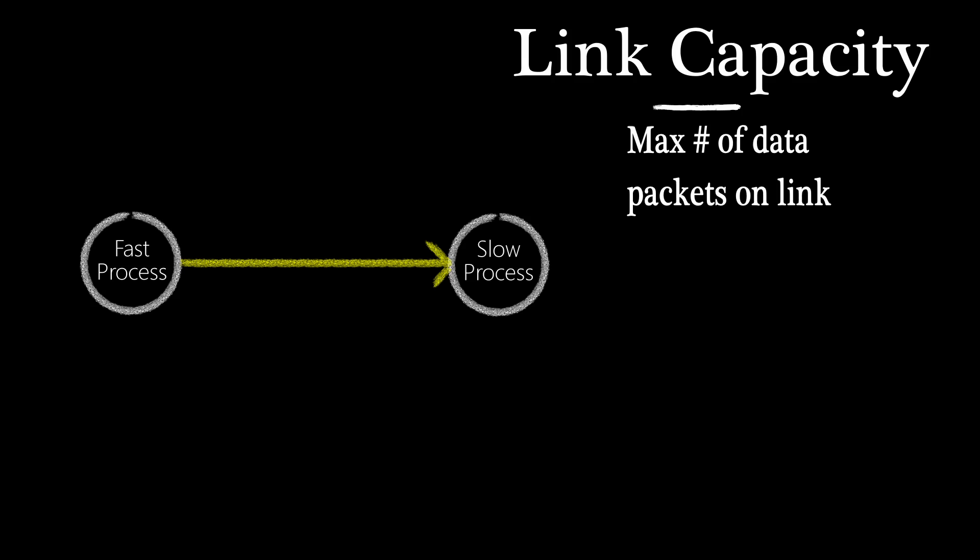Often, implementations have a capacity of either one or a few, but theoretically, the link could have an unbounded capacity. It's useful when you have a mismatch in speed between the two nodes.